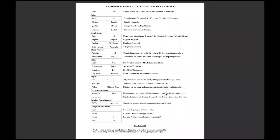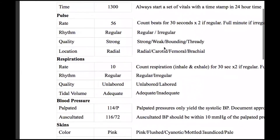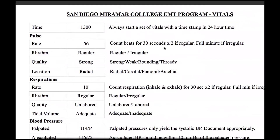Looking at the vital signs study guide, we'll go to the top and look at pulse. Make sure that you write the time. Vital signs should always be timestamped because you want to create trends. Your first set of vital signs might be at 1300, your second set at 1305, and your third set at 1310.